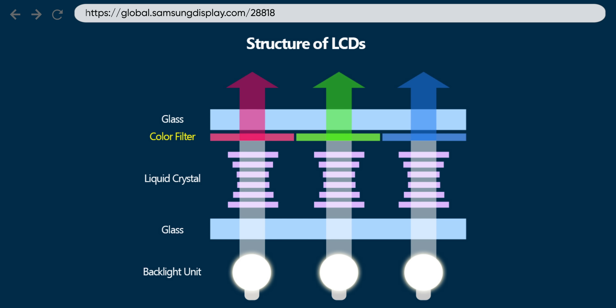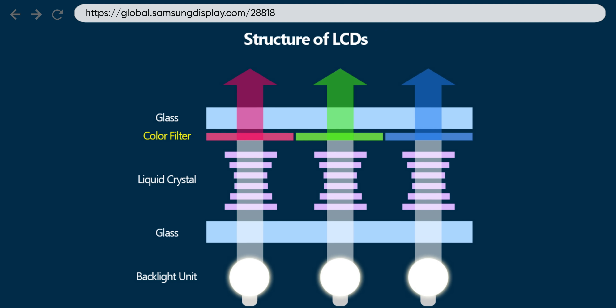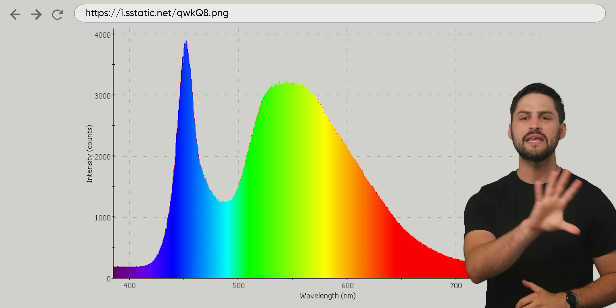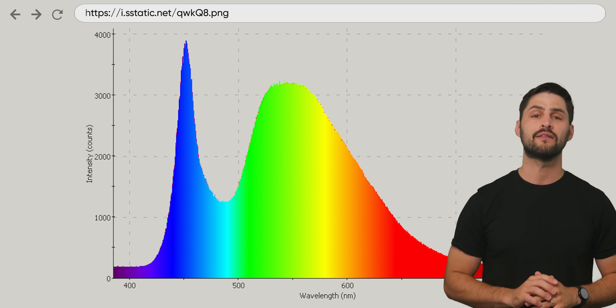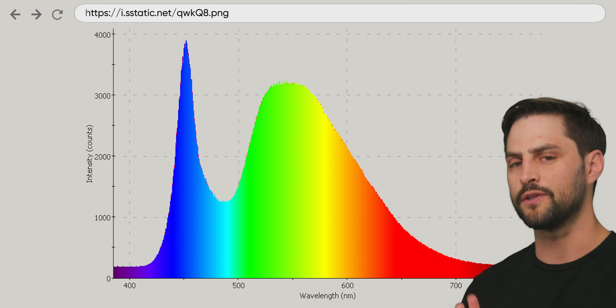But standard LCDs still struggle with color purity, at least to some extent. This is because they work by shining a white LED backlight through a color filter that makes the sub-pixels red, green, or blue. But that white backlight is what's often called broad spectrum, meaning it's composed of many colors other than those three primaries. This, plus the imperfect color filtering, means that LCDs aren't exactly perfect at reproducing colors accurately.